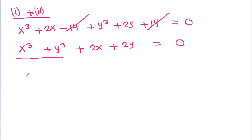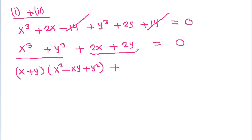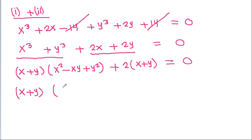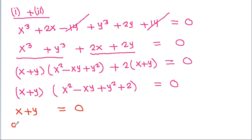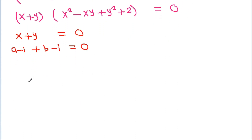Factoring x cubed plus y cubed as (x plus y)(x squared minus xy plus y squared), and taking (x plus y) common from the remaining 2x plus 2y term, we get (x plus y)(x squared minus xy plus y squared plus 2) equals 0. So either x plus y equals 0, which gives (a minus 1) plus (b minus 1) equals 0, so a plus b minus 2 equals 0, meaning a plus b equals 2.